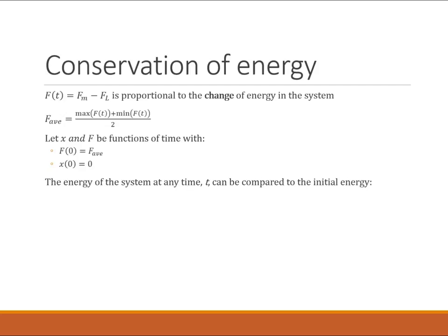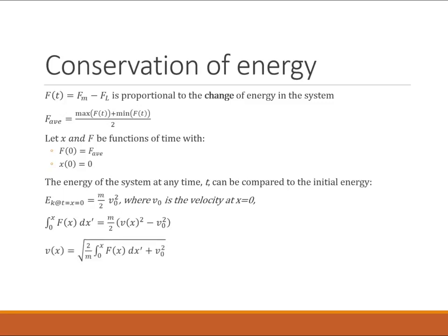Then at any point in time I can compare the amount of energy in the system to the initial energy. The energy when t equals zero is m over two times the velocity when t equals zero squared. That's just the energy at the initial state. And if I integrate this, now at any point in time x I can find the total amount of energy in the system. And that gives me the velocity and this is the key. This is what I was looking for.